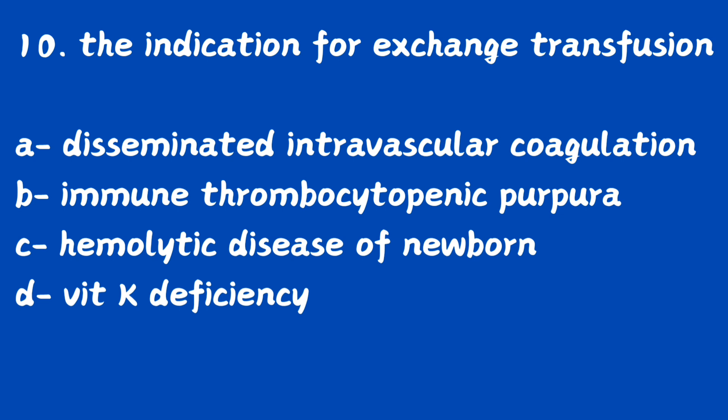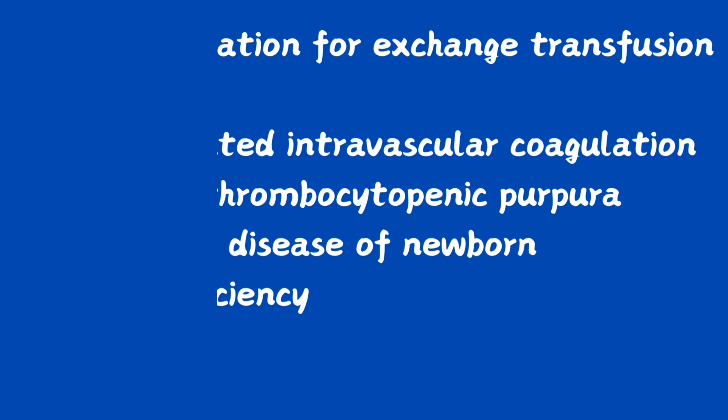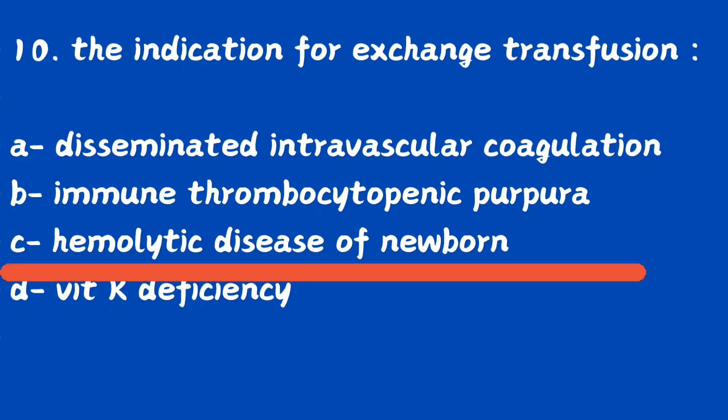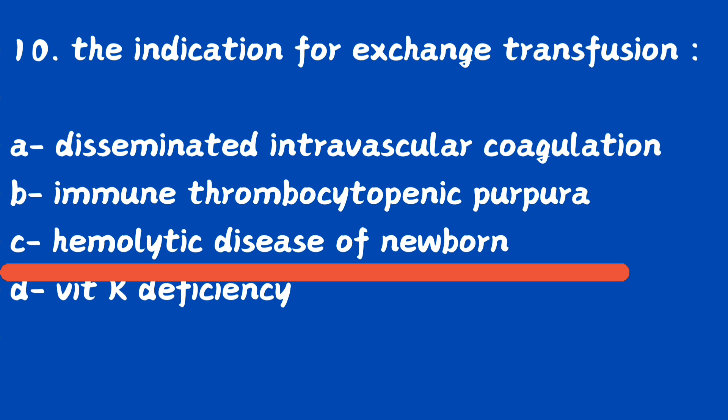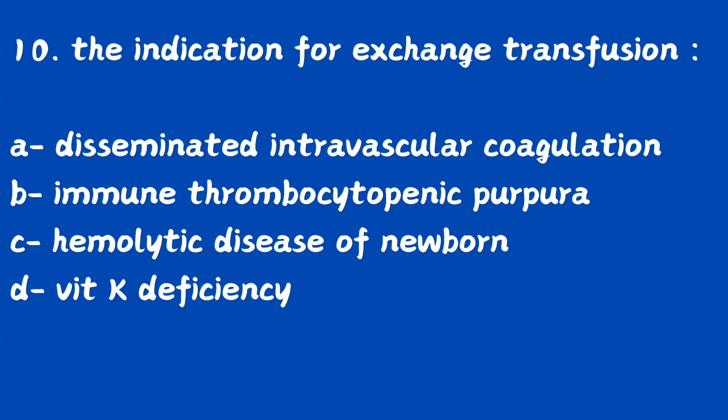Question number 10. The indication for exchange transfusion: option A, DIC (disseminated intravascular coagulation); option B, immune thrombocytopenic purpura; option C, hemolytic disease of the newborn (HDN); option D, vitamin K deficiency. Which condition is the indication for exchange transfusion? The right answer is option C, hemolytic disease of the newborn.